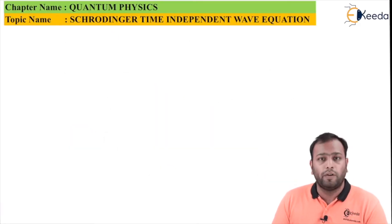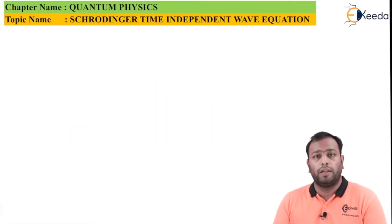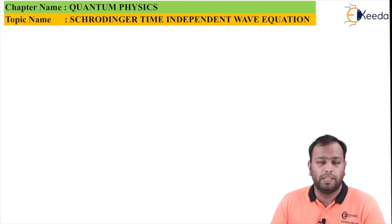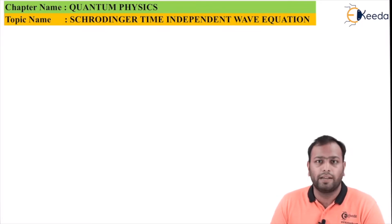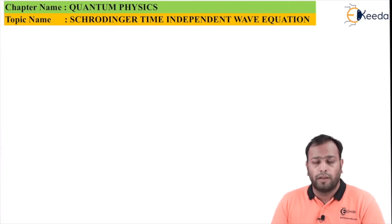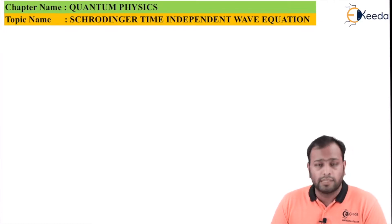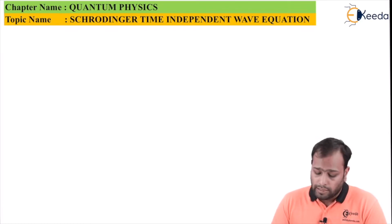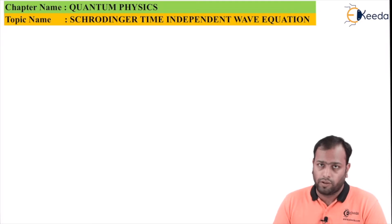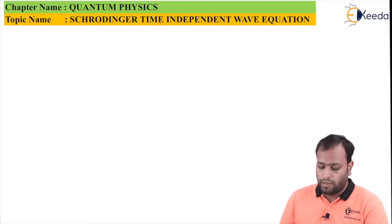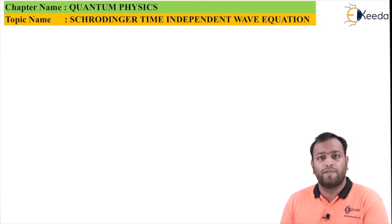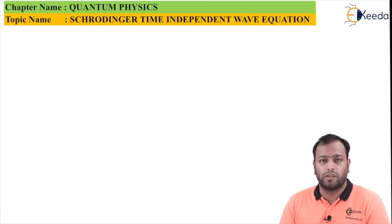Schrödinger's time independent wave equation. Before beginning with this, please do remember we have two derivations for the same. Schrödinger derived the same equation in two formats — one which was time dependent and second it was time independent. In this, we will be covering the time independent equation of Schrödinger. So first of all, let's get to know the prerequisites of Schrödinger's time independent equation.